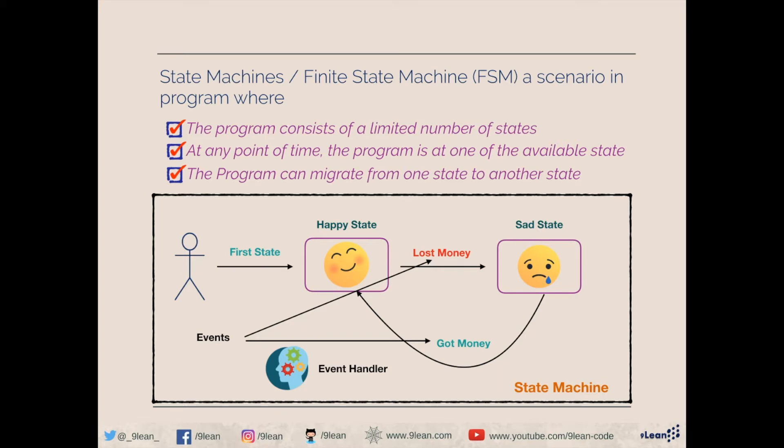In a nutshell, a state machine consists of a first state, a set of available states like happy state and sad state, a set of events like 'lost money' and 'got money', and a set of event handlers which transform us from one state to another. I hope that clarifies what a state machine is. Let's go ahead and see the code.